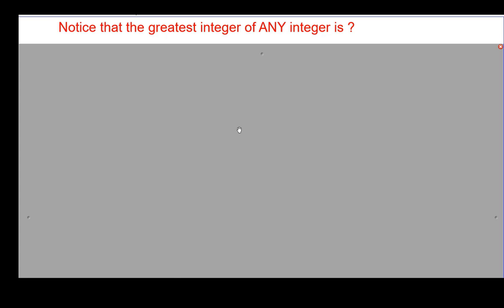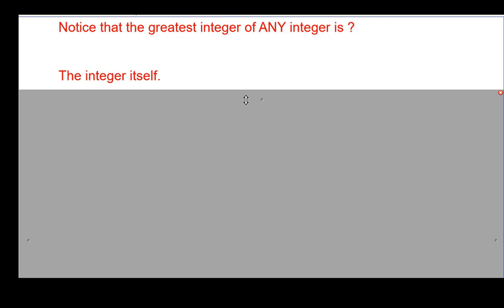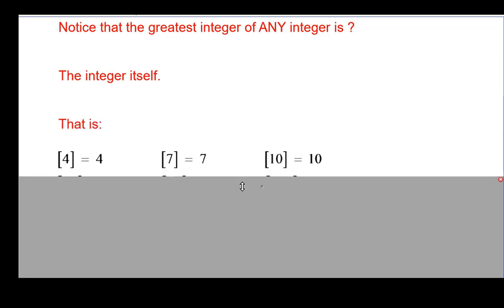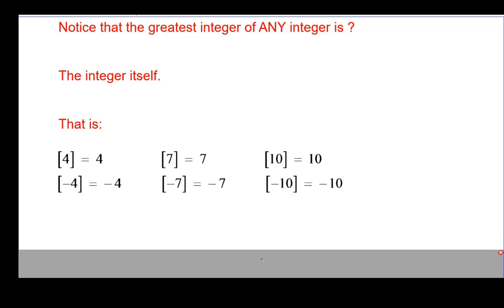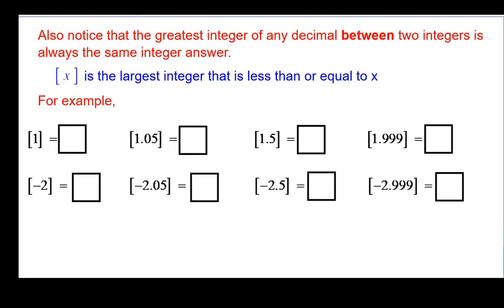So you'll notice that the greatest integer of any integer is the integer itself. For example, the greatest integer of 4, of 7, and 10, and even of the negative numbers. But also notice that the greatest integer of any decimal between two integers, not including the endpoints, but between two integers, is always the same integer answer. They have the same answer.